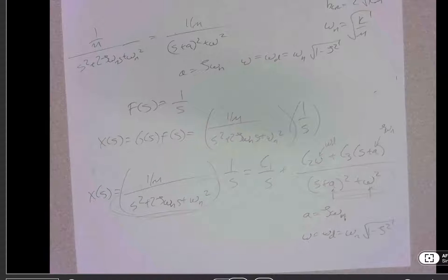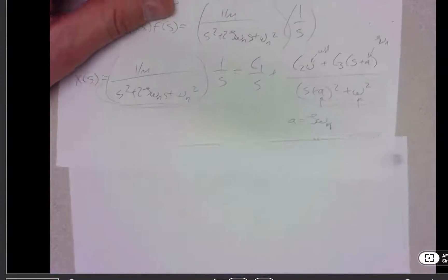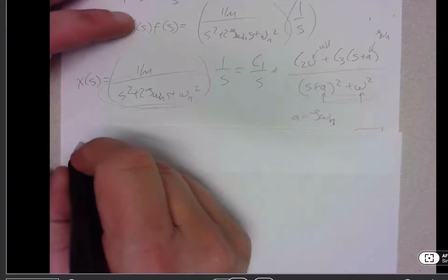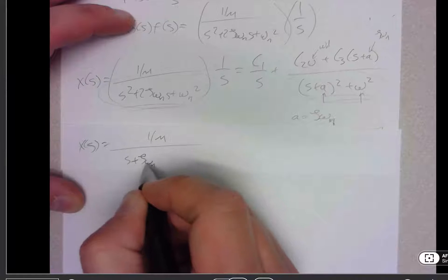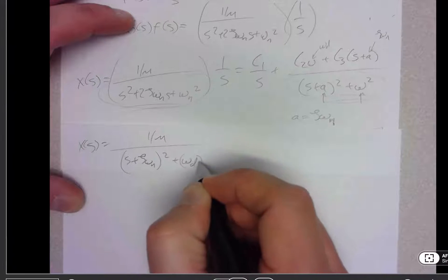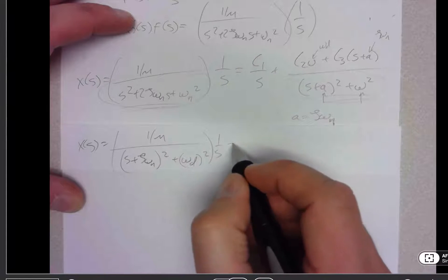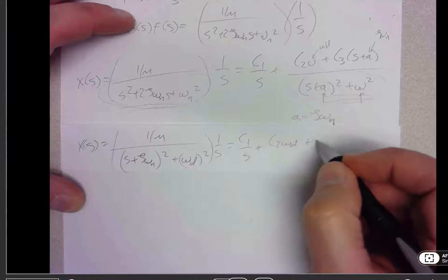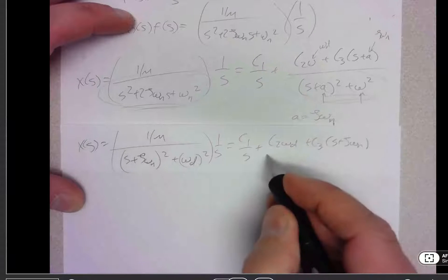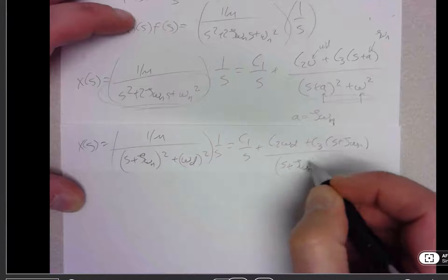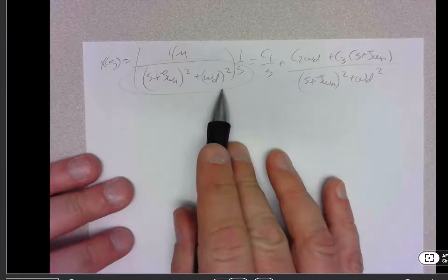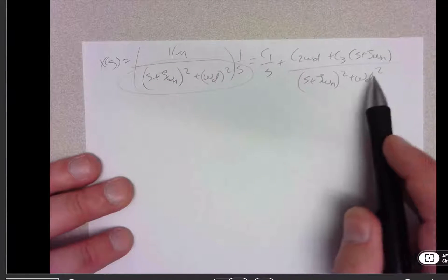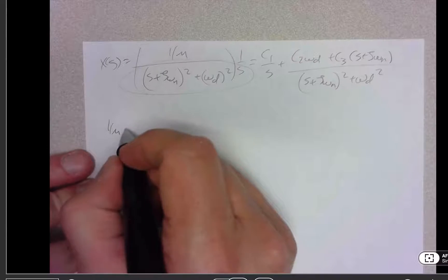Going to do my partial fraction expansion. I write x(s), rewriting it as 1 over m times s plus zeta omega-n squared plus omega-d squared, times 1 over s, equal to c1 over s plus c2 omega-d plus c3 times s plus zeta omega-n, all divided by s plus zeta omega-n squared plus omega-d squared. Multiplying through by s times the other denominator, the s terms cancel, and we find that 1 over m equals c1.